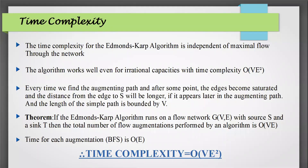The time complexity of the Edmonds-Karp algorithm is O(V·E²), and it is independent of the maximal flow. According to the theorem, this algorithm runs on a flow network with source S and sink T; the total number of flow augmentations performed is O(V·E), and the time for each BFS augmentation is O(E). Therefore, the total time complexity is O(V·E²).